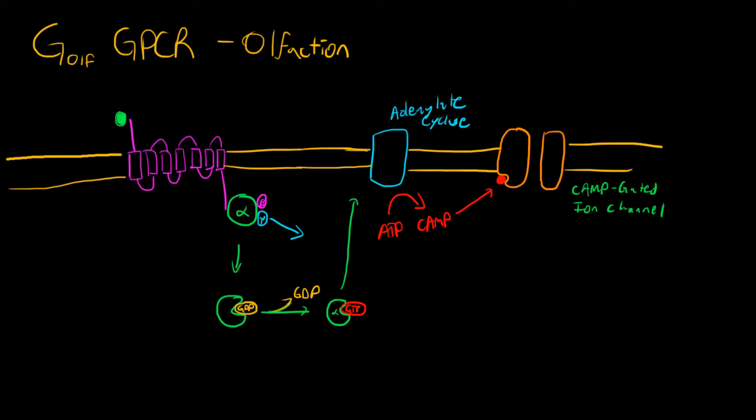And even more specifically, a cyclic AMP-gated cation channel, because what it's going to let through, what it's going to let into the cell, is calcium ions and sodium ions.